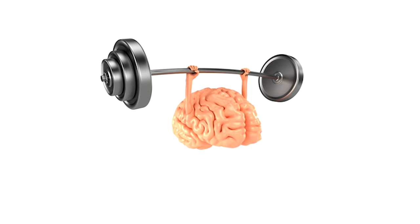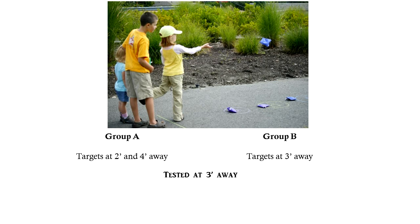Here are two more quick examples where mental struggling seemed to pay off. The first example involves 12-year-olds being split into two groups and then tossing beanbags. Group A were given targets that were both two feet and four feet away. Group B were given targets that were three feet away.